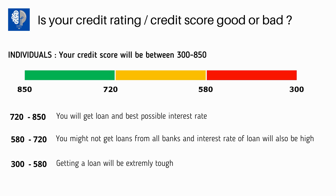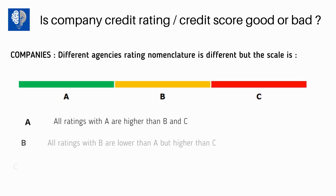You should know what your credit rating means. For an individual, it is a score between 300 to 850. If it is more than 720 and reaching 850, you are in the best zone and will get the loan at the best possible interest rate. If you are at 580 to 720, some organizations will give you loans but at a higher interest rate. It is better to move up to the 720 to 850 range. A score of 300 to 580 is something you should avoid, because getting a loan is extremely tough, and developing a credit rating takes time.